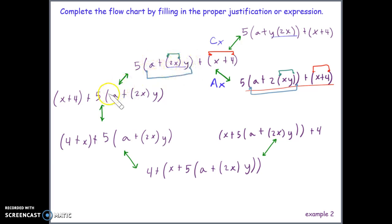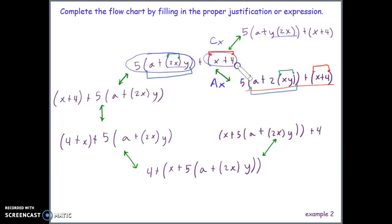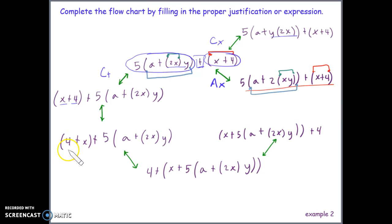Comparing this expression to the one on the left, the order clearly changes — this begins with 5 parentheses, the other begins with x + 4. We are changing the order of things being added, because there is an addition sign between what changed. This is the commutative property of addition. Looking at the middle expression and the one below it: x + 4 became 4 + x — addition order changed — commutative property of addition.